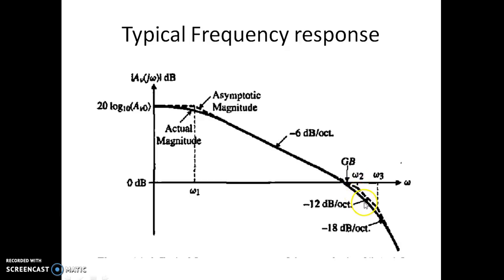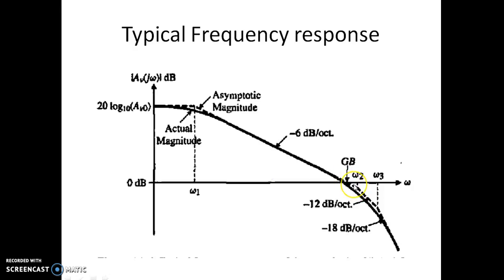At omega 2, the slope changes to minus 12 dB per octave, which corresponds to minus 40 dB per decade. There is one more pole at omega 3, which introduces another minus 20 dB per decade change, so between omega 2 and omega 3 the slope is minus 12 dB per octave, and beyond omega 3 it becomes minus 18 dB per octave or minus 60 dB per decade. This is the typical frequency response of an op-amp having three poles at omega 1, omega 2, and omega 3.